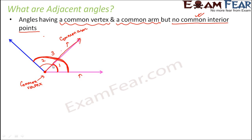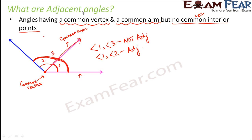Looking at this, you can see that angle 1 is like a part of angle 3 — angle 1 is sitting in the territory of angle 3. So they are not sitting next to each other. Angle 1 and angle 3 are not adjacent, whereas angle 1 and angle 2 are adjacent. This is where these three conditions help — only when all three conditions are satisfied can we say that two angles are adjacent angles.